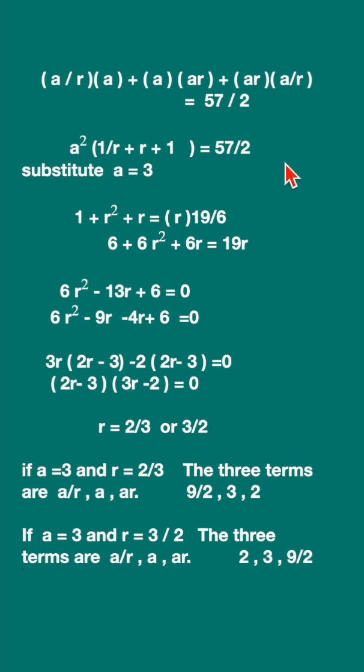So here if you bring it down, 57 divided by 2 into 9—that is, 9 will be in the denominator. You will get 19 by 6, and this r is the LCM of the left-hand side that also we are bringing to the right-hand side.